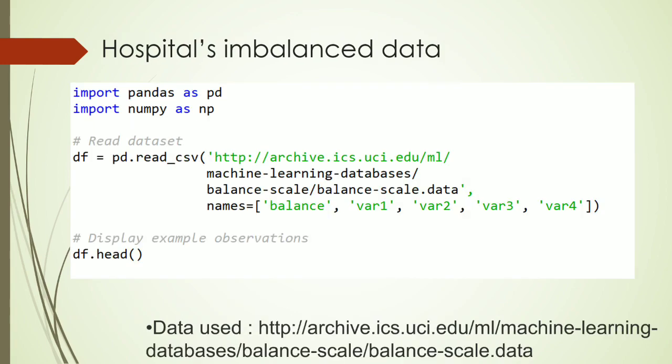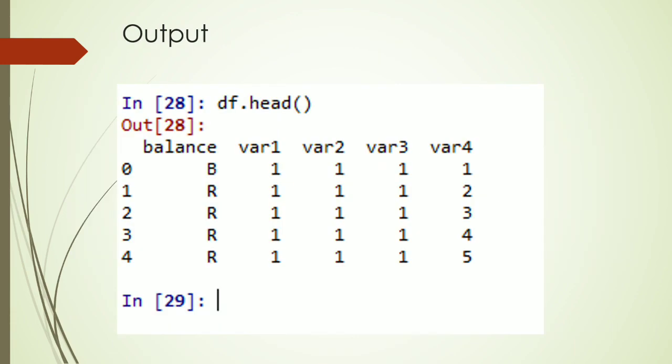Now let's look at the data. We are importing pandas and NumPy as discussed in older videos. The dataset is a common public dataset from archive.ics.uci.edu. The columns are: balance, variable 1, variable 2, variable 3, and variable 4. If you display the head of the data you can see the first five rows. The target variable is labeled 'balance' and there are four input variables.